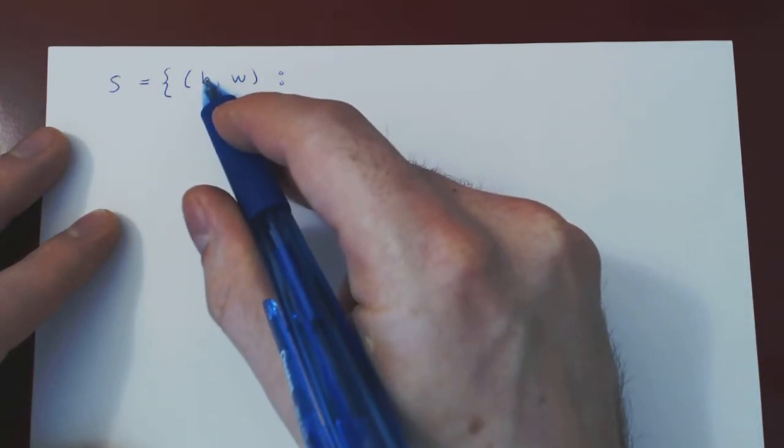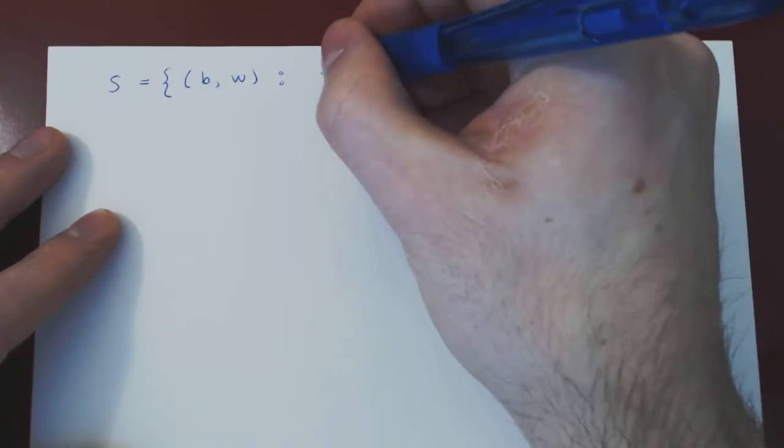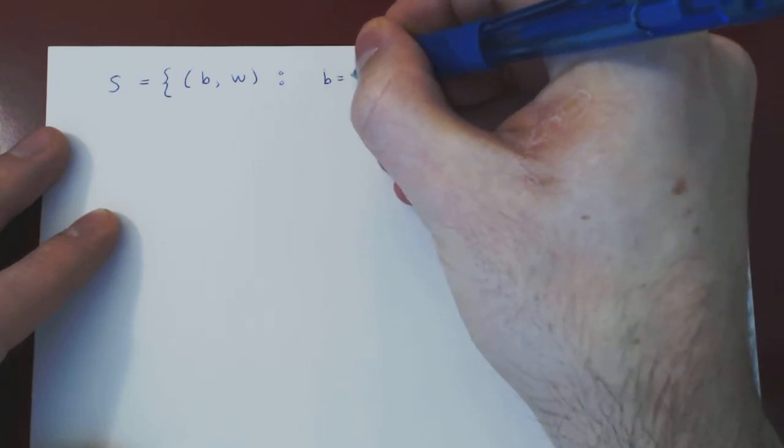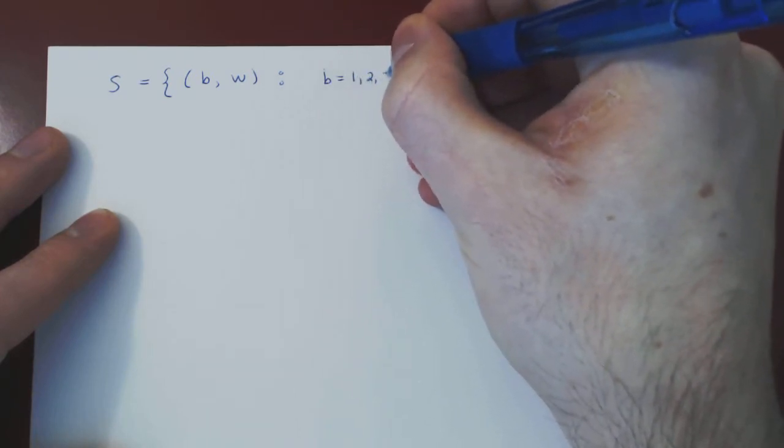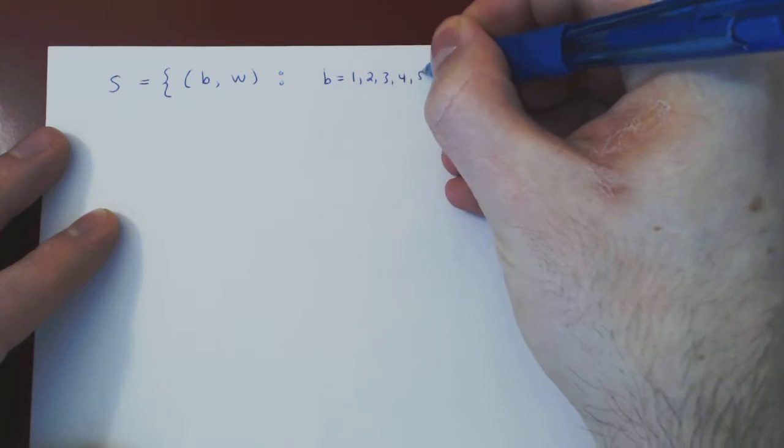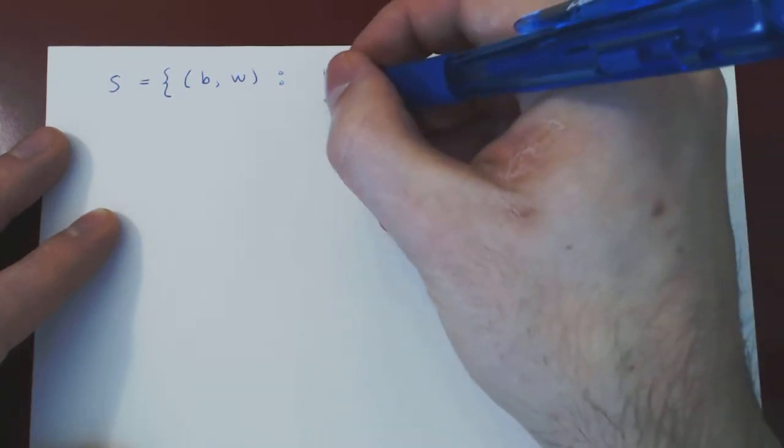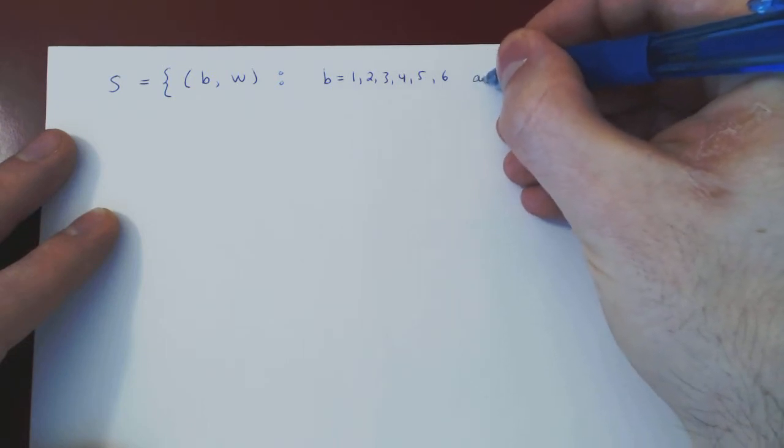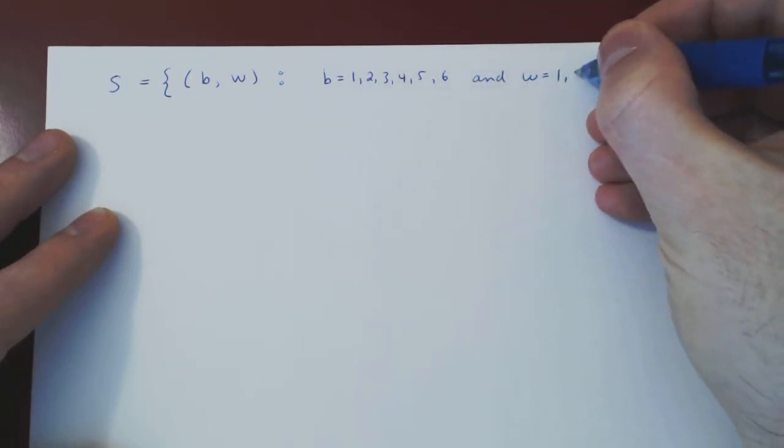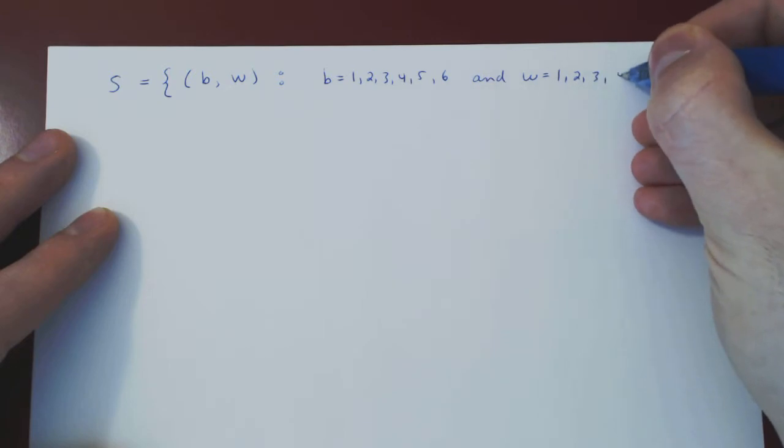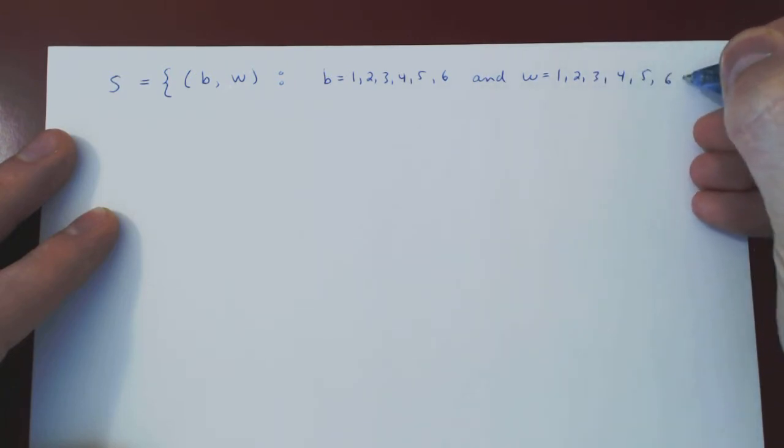Now there are six possibilities for each one. The black die can return a one, two, three, four, five, or six, and the same for the white die. It can return also a one, a two, a three, a four, a five, and a six.